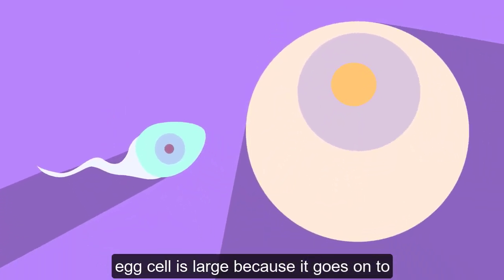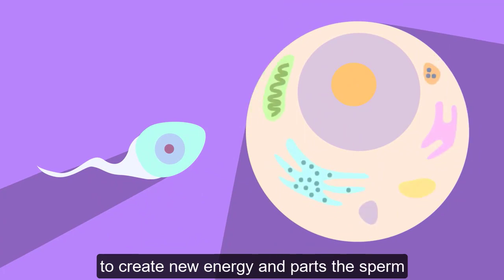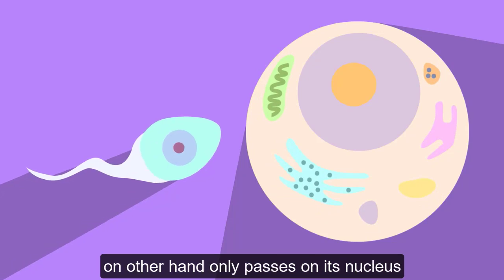The egg cell is large because it goes on to become a new person, and so it's packed full of cell organelles, which allow it to create new energy and parts. The sperm, on the other hand, only passes on its nucleus.